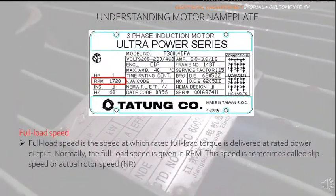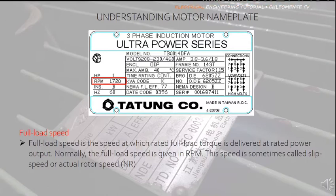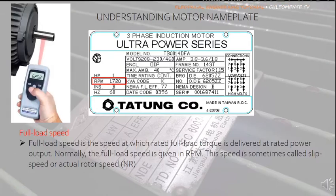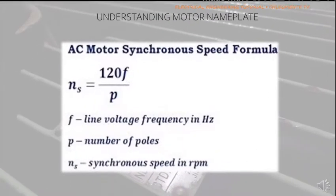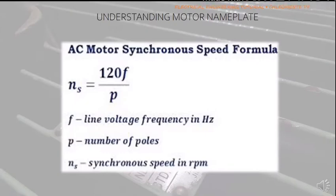RPM data tells you the full load speed of a motor when delivering its rated power output — the speed you can see on the rotor shaft when the motor is running, which is why it's called rotor speed. This data can be measured by an instrument called a tachometer and can be used to determine the number of poles the motor has. The speed formula is: Ns = 120F / P, where Ns is speed in RPM, P is the number of poles, and F is the line frequency in hertz.